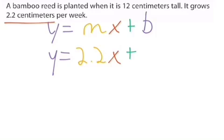And we can add this to our original amount. What is our original amount when x is 0? It is going to be 12. 12 centimeters is what we have here. So, we can write this as y equals 2.2x plus 12.